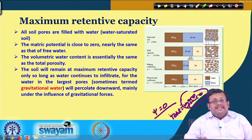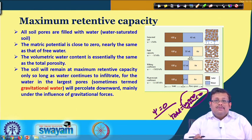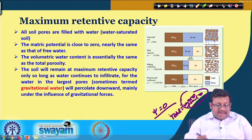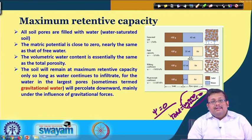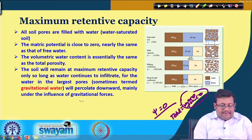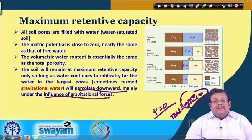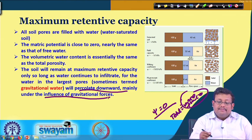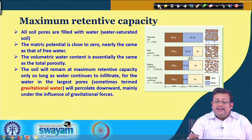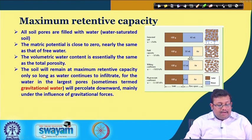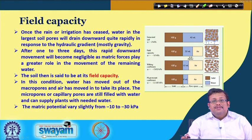When infiltration stops, gravitational water from the macropores drains out under the influence of gravitational forces — this movement is percolation, where gravitational water percolates downward mainly under gravitational influence.